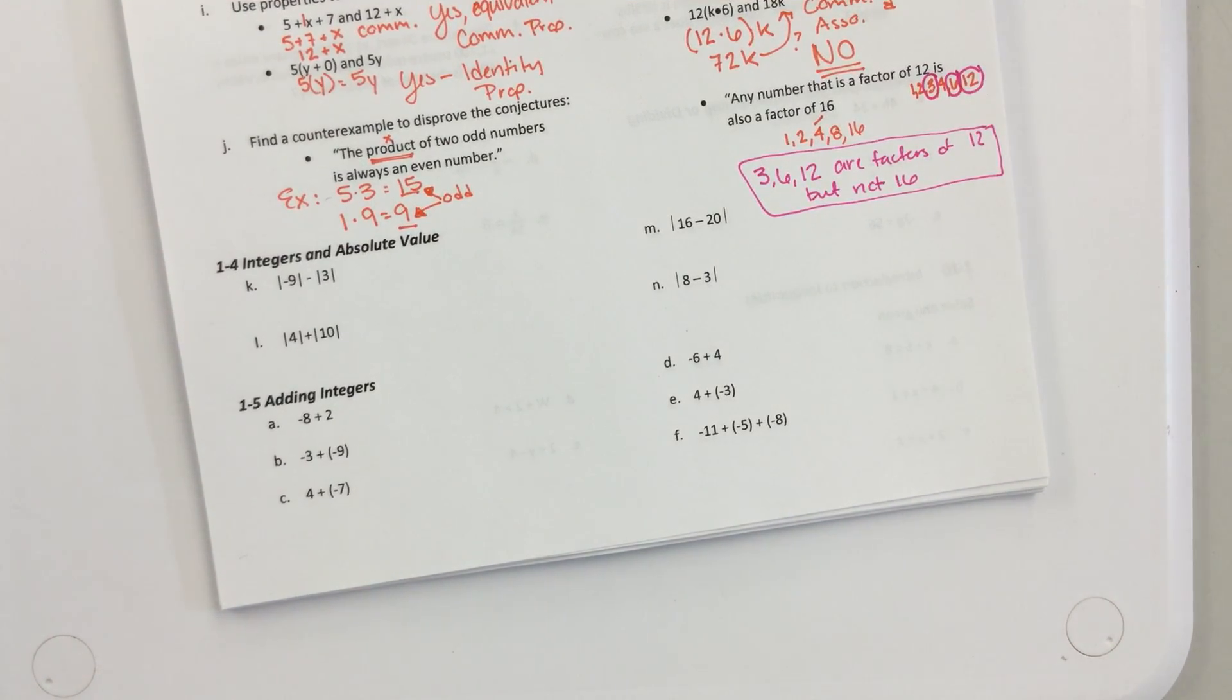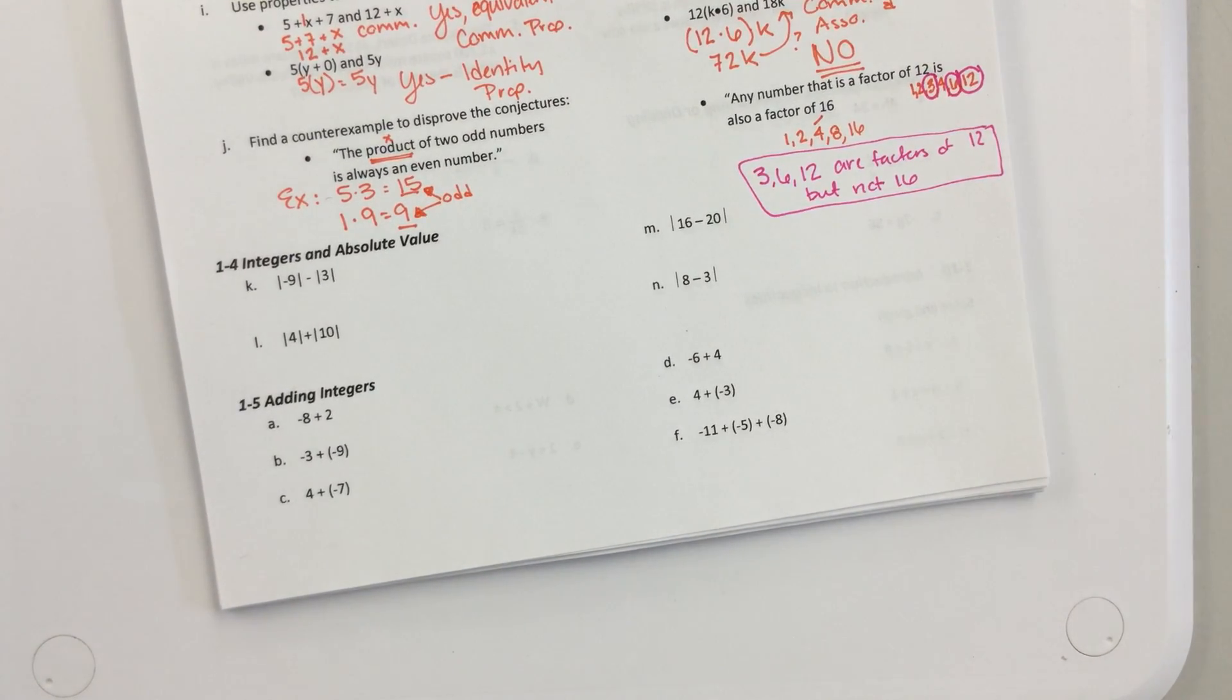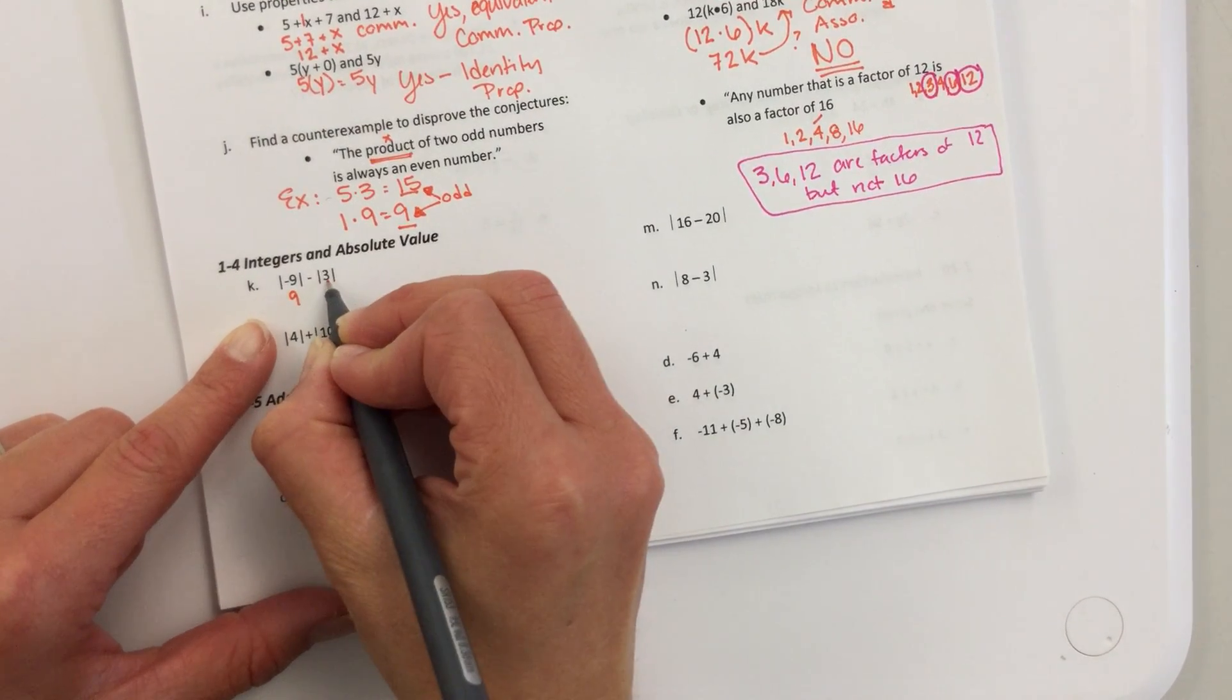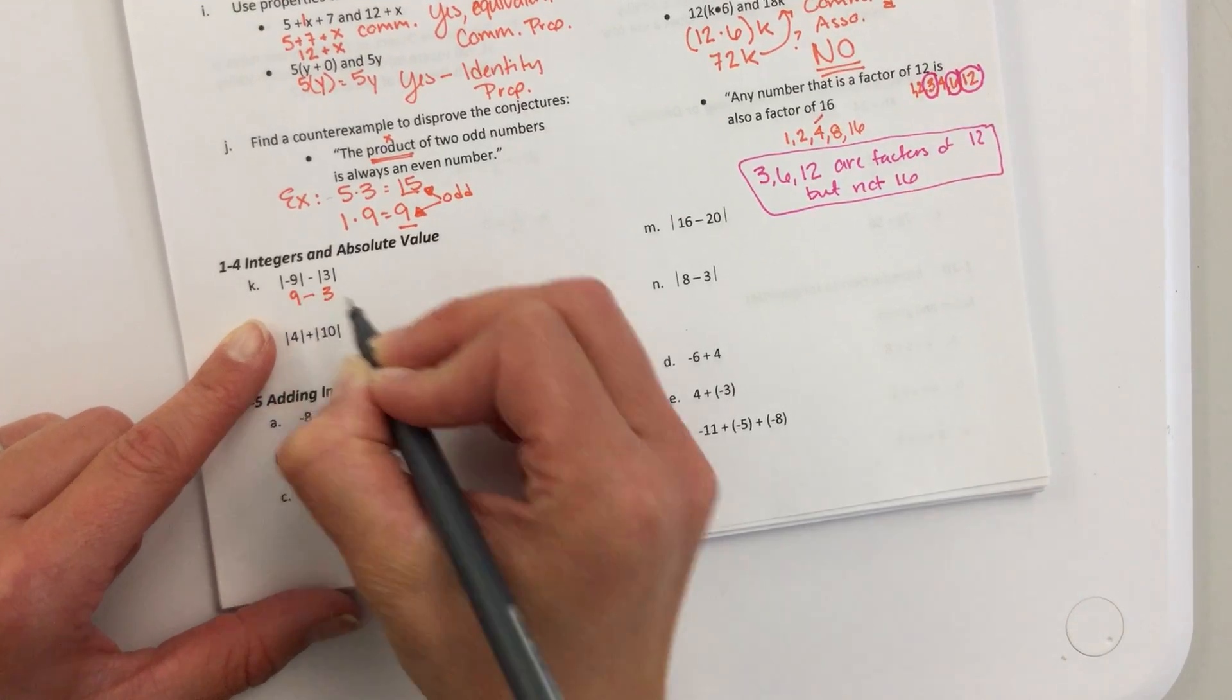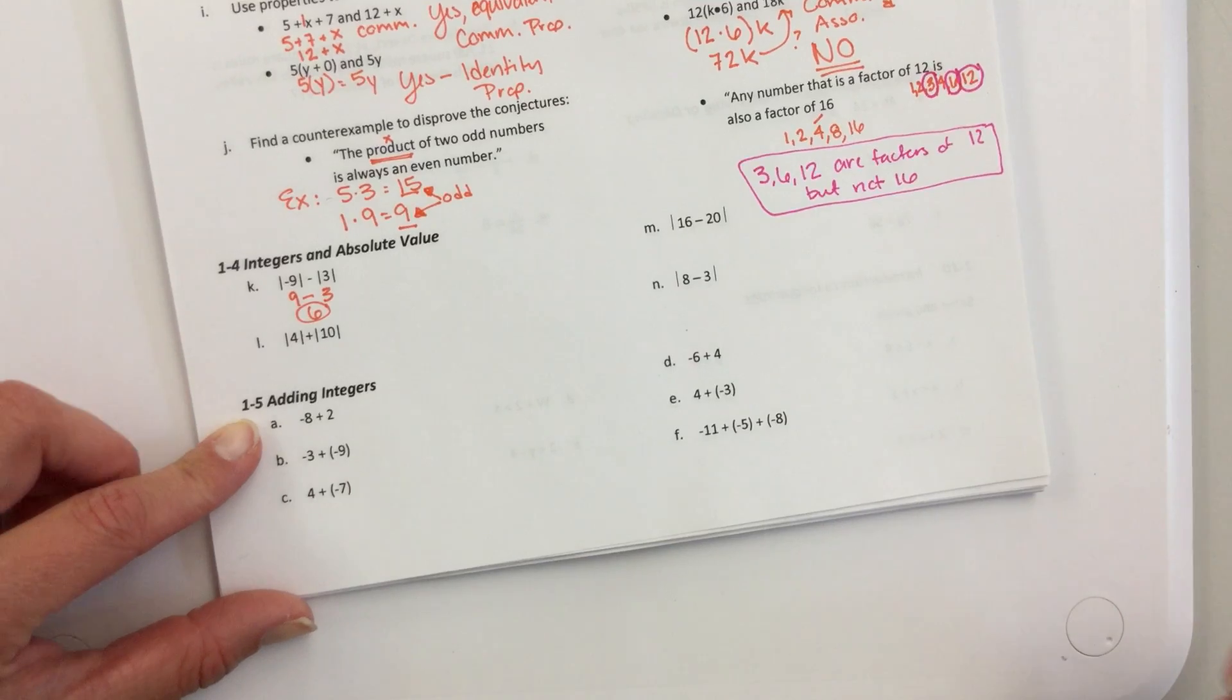Okay, absolute value. These are really simple, but I feel like you guys got lots wrong on your quiz. So just make sure that absolute value, it's the distance the number is from zero. It's always positive. Question, Devon? No. Okay, so what is the absolute value of nine? Nine. What's the absolute value of three? Three. What's nine minus three? Six. Six.